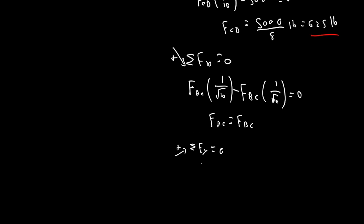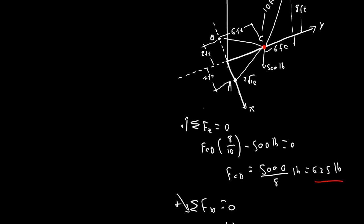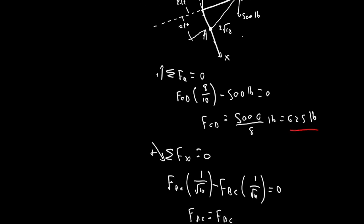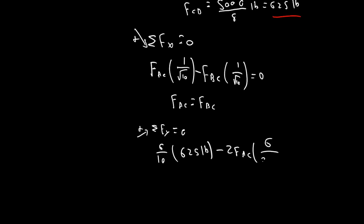So, 6 over 10 times our 625 pounds, minus Fac equals Fbc, correct? So, that would mean that the y component of these is going to be the same. So, we can say it's 2Fac, where Fac equals Fbc, so minus 2Fac times, what was that? Now, that was 6 over 2 root 10. And that equals zero. Otherwise, it would be Fac times 6 over 2 root 10, plus Fbc times 6 over 2 root 10. But since Fac equals Fbc, then it's Fac plus Fac times 6 over 2 root 10, which is going to be 2Fac times 6 over 2 root 10. I guess I can cancel these 2's.